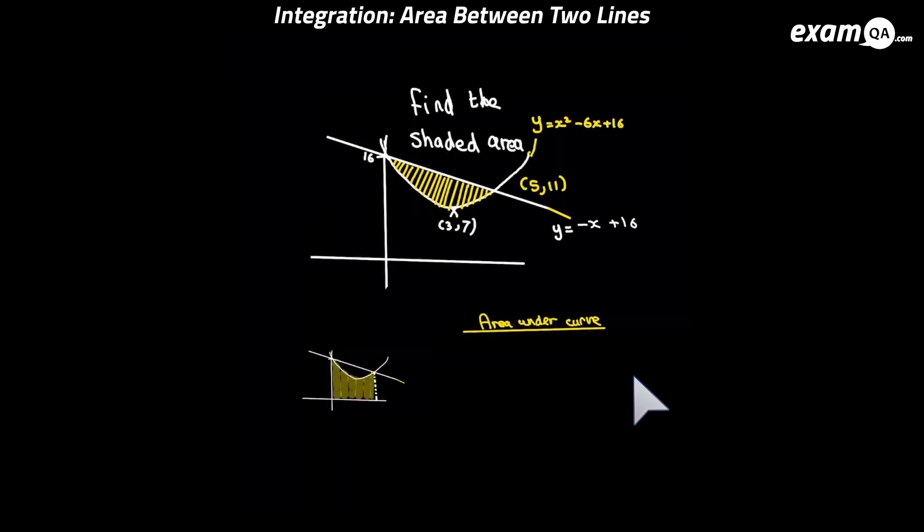Now we're going to work out the area under the curve. Now if you're not sure how to do this you need to go back to my video on area underneath curves and do that first. Okay so we're going to integrate the curve between the limits 5 and 0. Of course we integrate by adding 1 to the power and dividing the number in front by that new power. And that's our integration done.